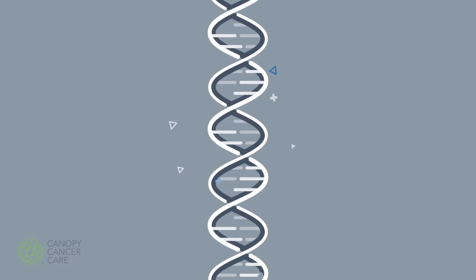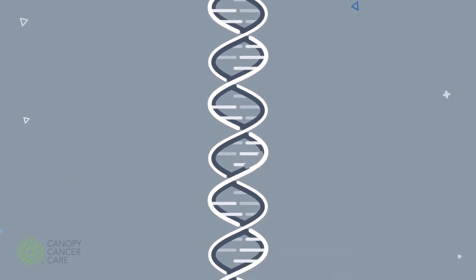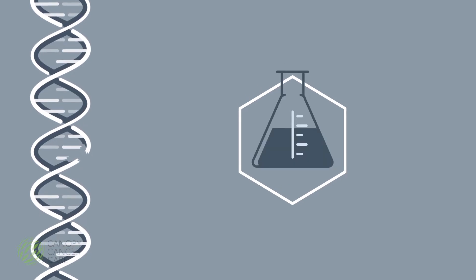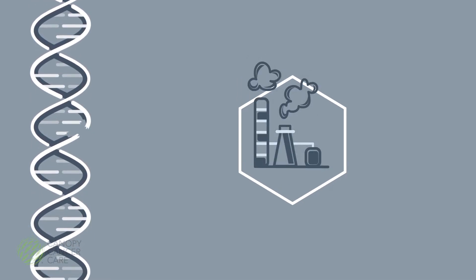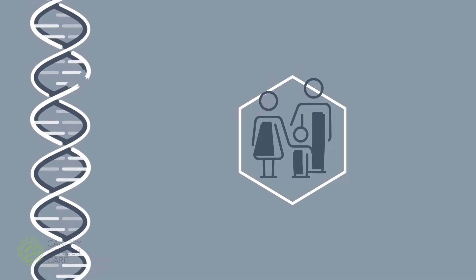occasionally the DNA instruction manual in a cell can get damaged or mutated. The cause of this mutation could be a chemical or environmental carcinogen. You might even have a hereditary risk for cancer. Other times the cause is unknown.